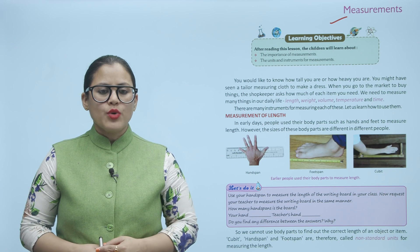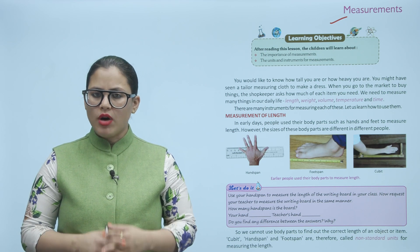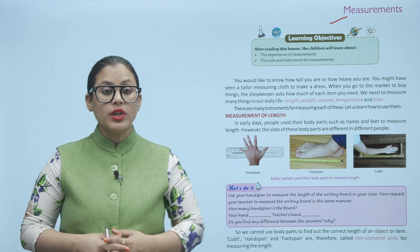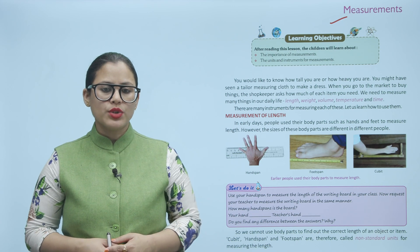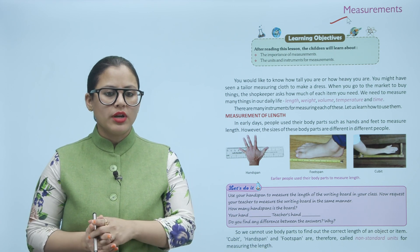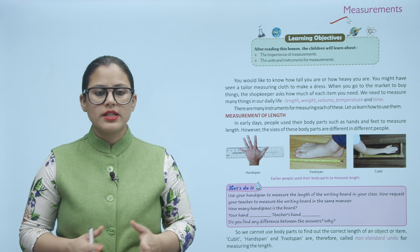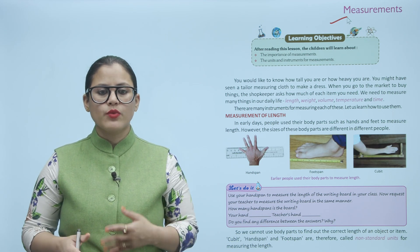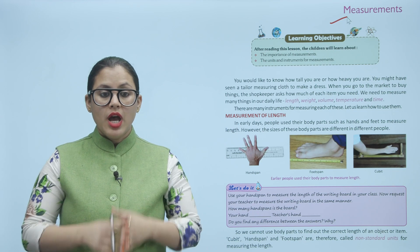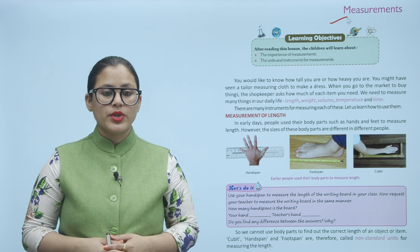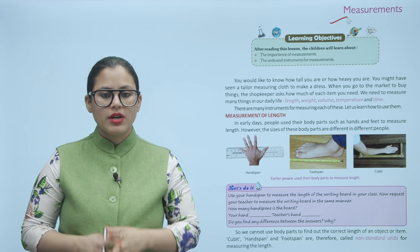You would like to know how tall you are or how heavy you are. You might have seen a tailor measuring cloth to make a dress. When you go to the market to buy things, the shopkeeper asks how much of each item you need. We need to measure many things in our daily life: length, weight, volume, temperature and time. There are many instruments for measuring each of these. Let us learn about how to use them.